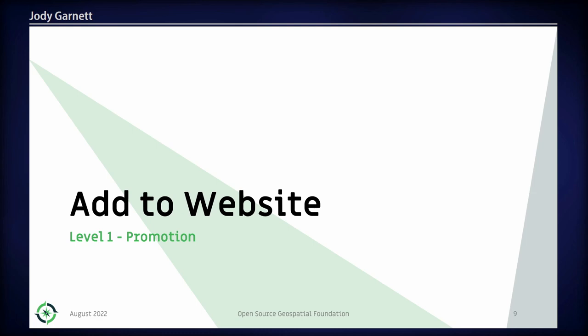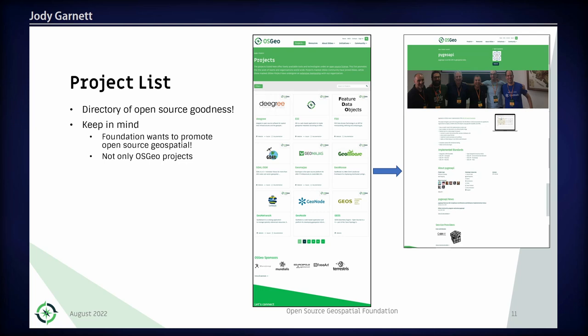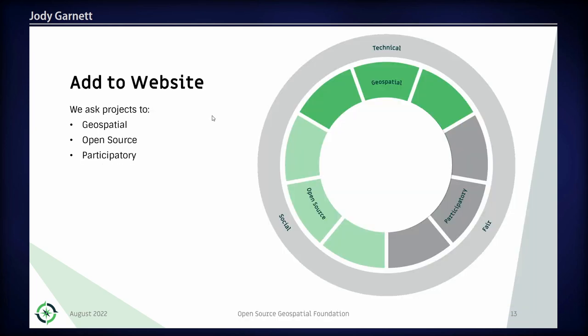The first thing we want to do for software projects is tell the world about them. We've got an OSGEO website with a discovery wizard where people can see what projects and tools are available. That's primarily the role of the marketing committee. There are also local chapters and Geo4All, which does academic outreach. On the incubation committee, we have a project list and a 'choose a project' page — that's one of the ways we help projects, by adding them to our website.